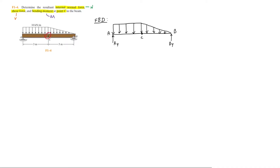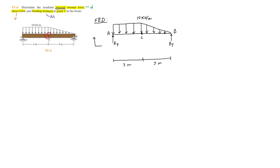The distributed load carries 10 kilonewtons per meter. We add in the dimensions, which are 3 meters and 3 meters. Lastly, we set up our coordinate system using x, y, and z, where the z-axis will be used for the moments.